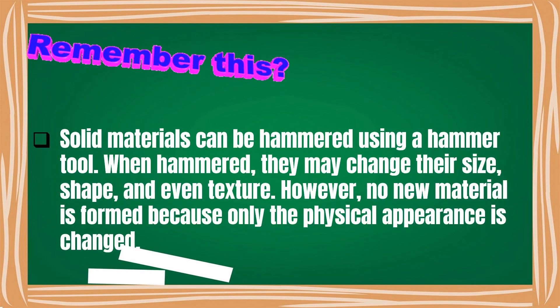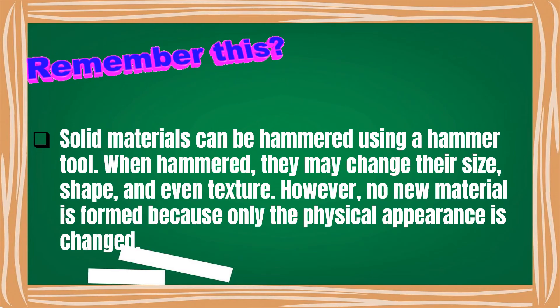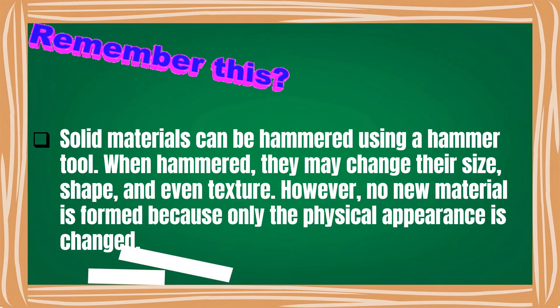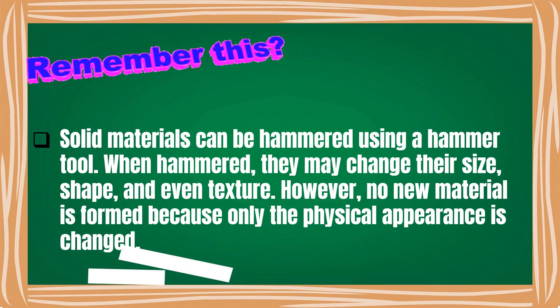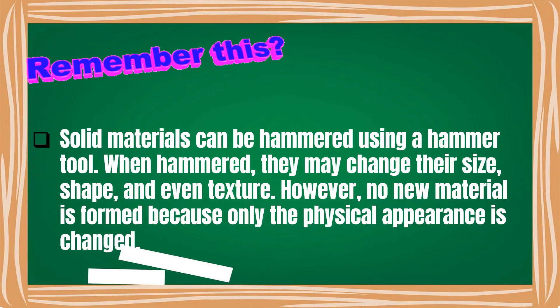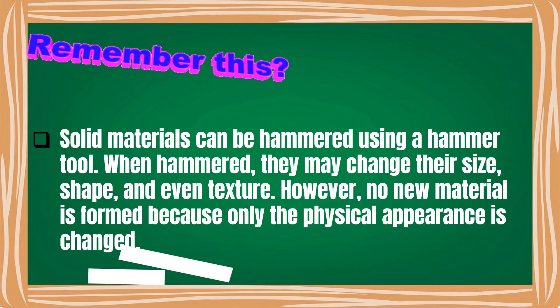Solid materials can be hammered using a hammer tool. When hammered, they may change their size, shape, and even texture. However, no new material is formed because only the physical appearance is changed.